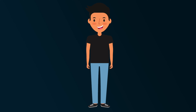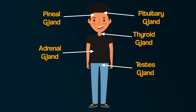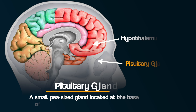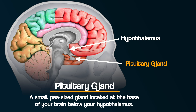Meet Eddie — Eddie the endocrine system. Let's consider five of his glands, the hormones they release, and the effect they have on his body. Firstly, the pituitary gland. Your pituitary gland is a small pea-sized gland located at the base of your brain, below your hypothalamus. The pituitary gland is sometimes called the master gland of the endocrine system, because it controls the functions of many of the other glands. The pituitary gland makes certain hormones including oxytocin.